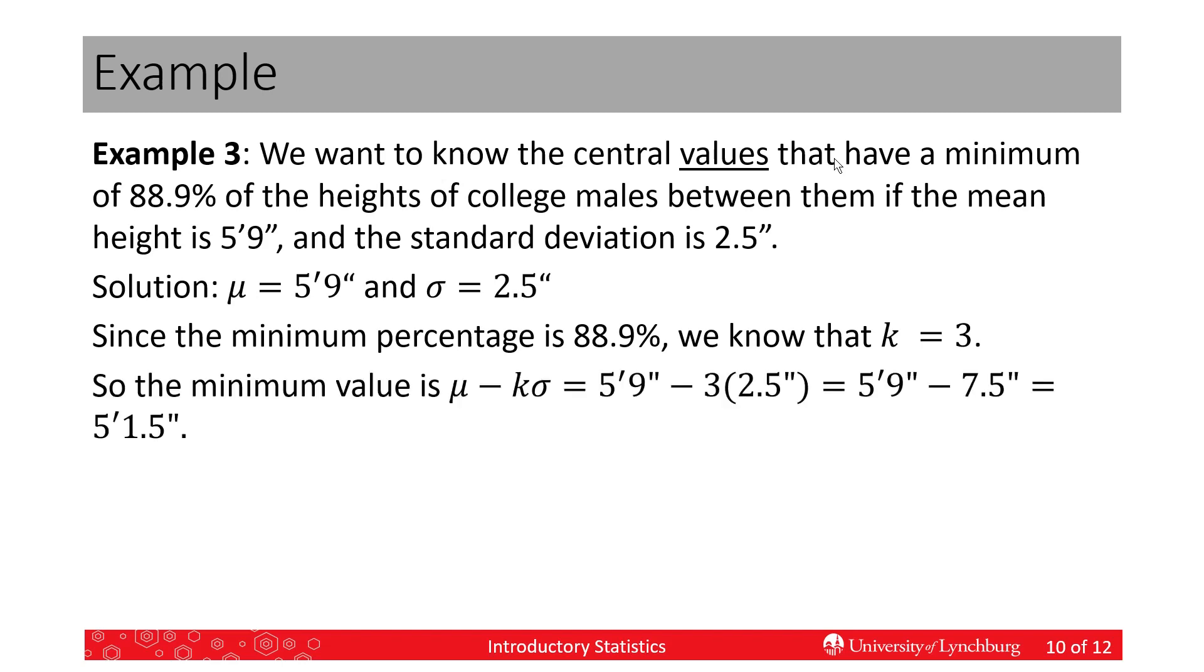So, the minimum value that we're going to end up with is mu minus k times sigma. So, we need to calculate that. We have mu, we have sigma, and now we have k. So, we plug in 5'9", 3 times 2.5. 5'9" minus 7.5 gives me 5'1.5 inches. That's the minimum value that I'm looking for.